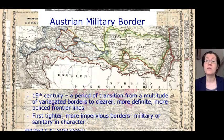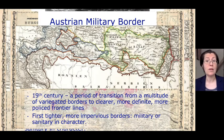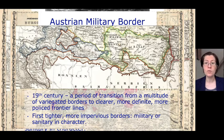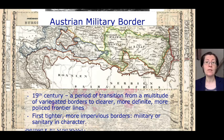This is the case of the Austrian military border that separated the Ottoman Empire from the Habsburg Empire, which you can see in this first picture.